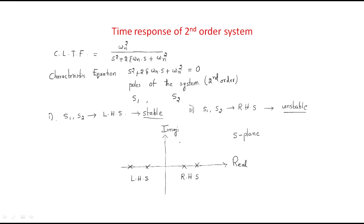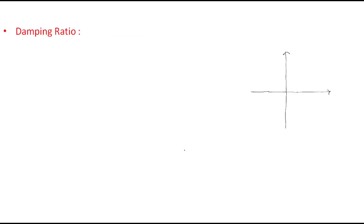Next we will discuss some points regarding the damping ratio. Zeta is our damping ratio and it plays a very important role here. If the zeta value is less than zero, the poles will be on the right half of the s-plane.